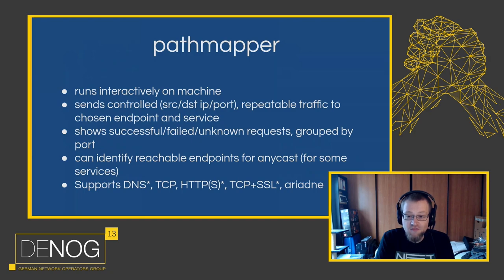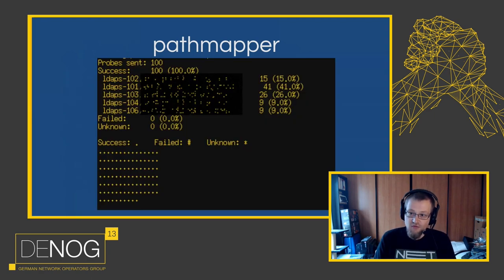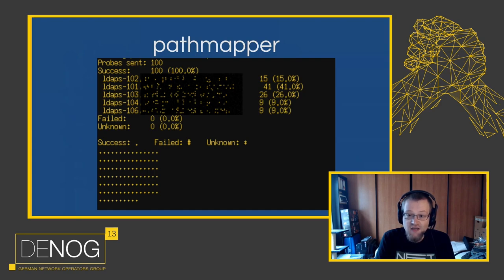PathMapper supports DNS with identification, general TCP ports, HTTPS with identification, TCP and SSL with identification, and it also supports Ariadne — we'll get to that in a second. The results look something like this: this is a snippet from the output. It sent 100 probes, all 100 were successful. It identified five hosts it could talk to — LBS 102, 101, and so on. Zero failures, zero unknowns. It shows a diagram of successes and failures in a square grid form.